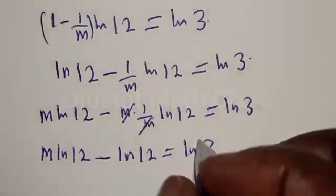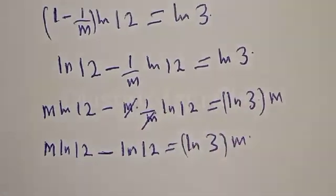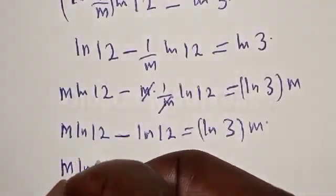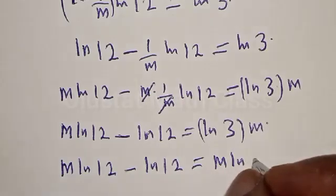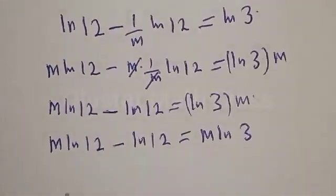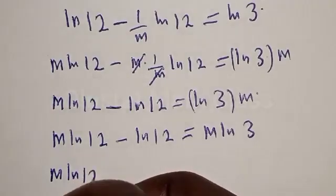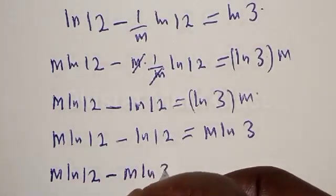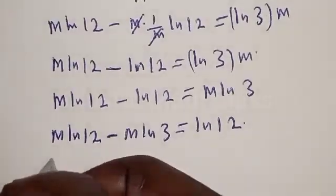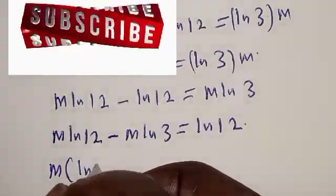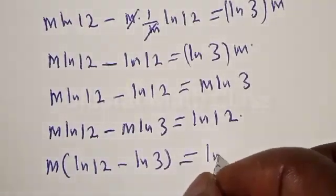Sorry for the error — here we've multiplied by m. So we have m natural log of 12 minus natural log of 12 equal to m natural log of 3. Then let's bring this term to this side. We have m natural log of 12 minus m natural log of 3 equal to natural log of 3. Now m is common, so we have m into natural log of 12 minus natural log of 3 equal to natural log of 3.